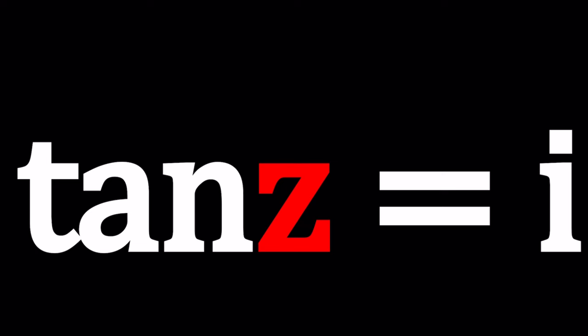A fun tan equation. We have tangent of Z equals I and we're going to be solving or attempting to solve for Z. Now why did I call this a fun equation? Let's find out. I'll be presenting three methods. Let's start with the first one.